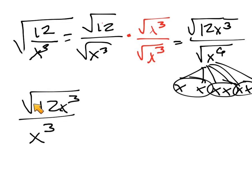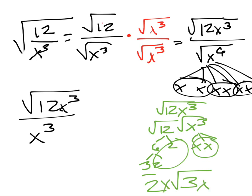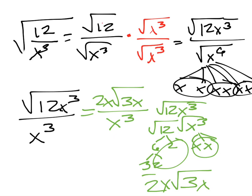Now I need to simplify the numerator: square root of 12x to the third. I can break that up into multiplication — square root of 12 becomes 2 radical 3, and x to the third becomes x times radical x. So that's 2x times square root of 3x, over x to the third. This is a more complex example but a good one to go over. We could simplify the x's but we won't worry about that right now.